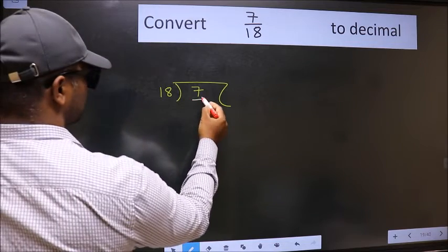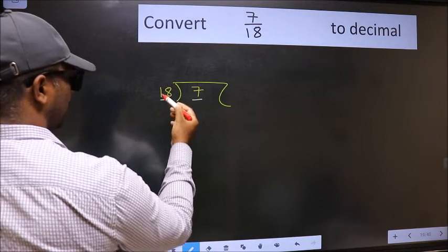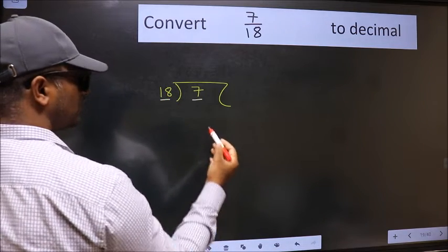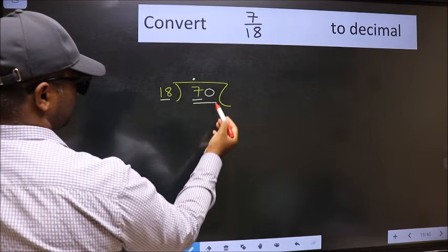Here we have 7 and here 18. 7 is smaller than 18, so we should put a dot and take 0. So 70.